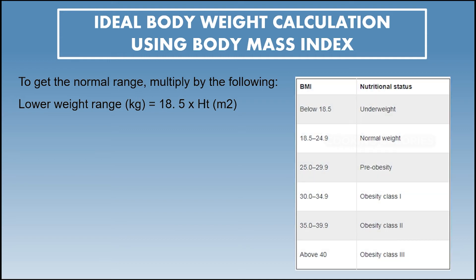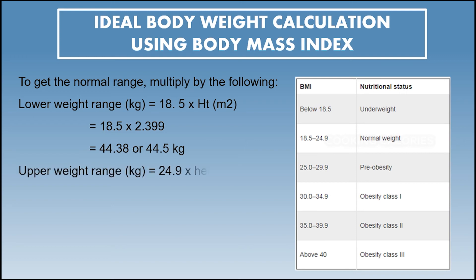The value 18.5 is used because, according to the World Health Organization, a BMI of 18.5 is considered the lowest BMI to be classified as normal weight. So 18.5 multiplied by 2.399 equals 44.38, or 44.5 kilograms.